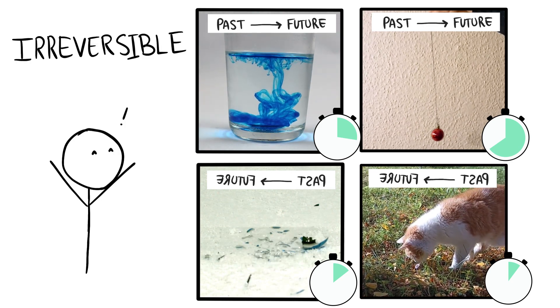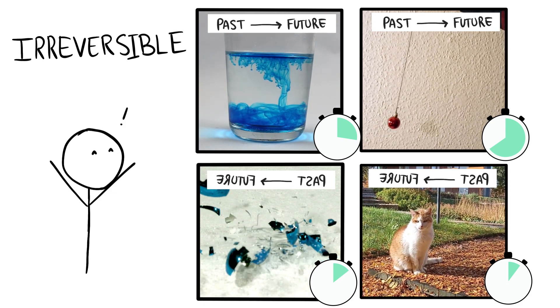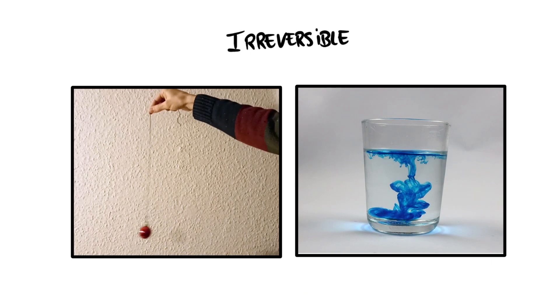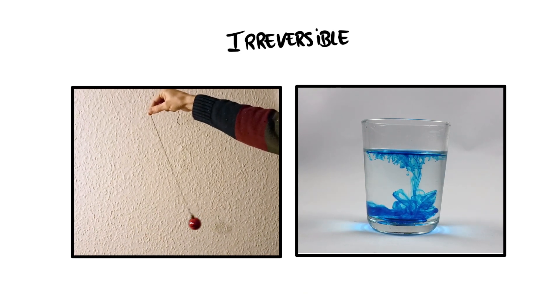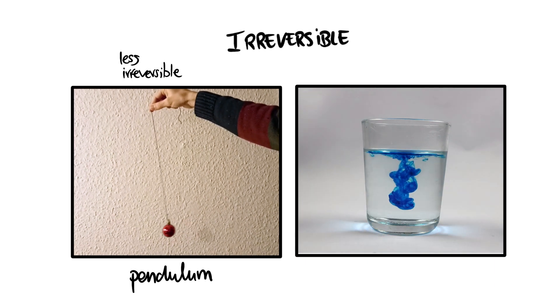That's because all these movies show irreversible processes, meaning they are much more likely to occur in a particular sequence than in reverse. But some processes are more irreversible than others. For example, the motion of this pendulum is much less irreversible than this mixing process.